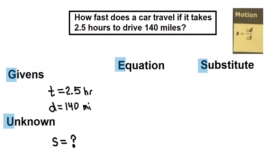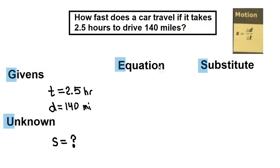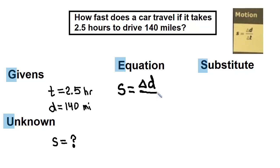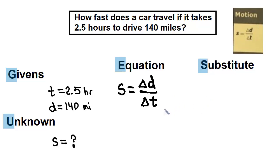Now let's move on to E and S — Equation and Substitution. These two steps go together. Now that you have your Givens and Unknown, just go back to your formula sheet and copy the equation exactly. Students sometimes try to memorize it and flip letters around — just copy it exactly as you see it on the formula sheet so you won't make any mistakes.